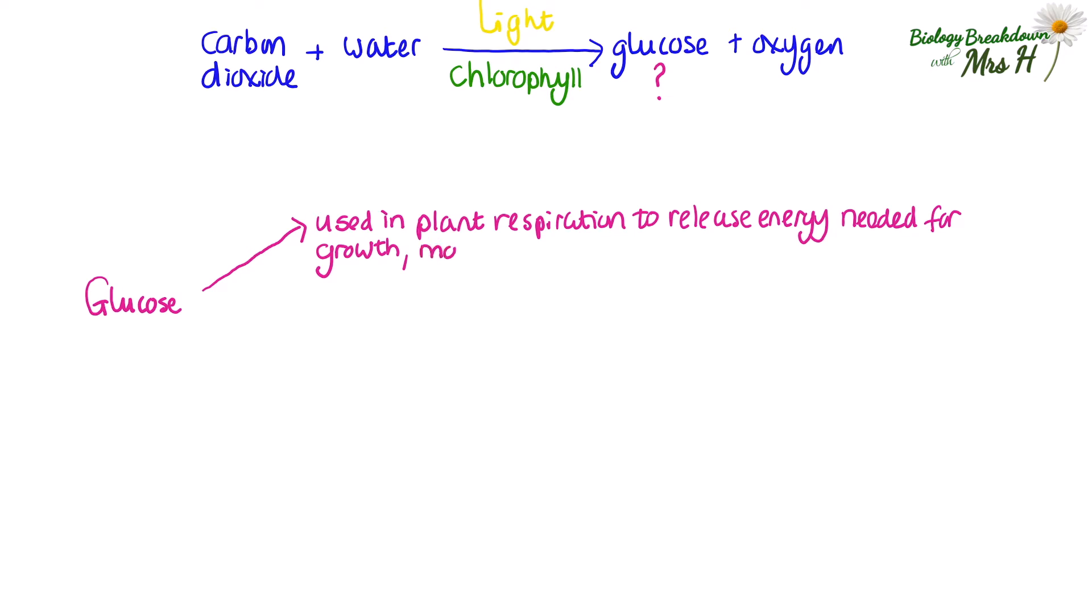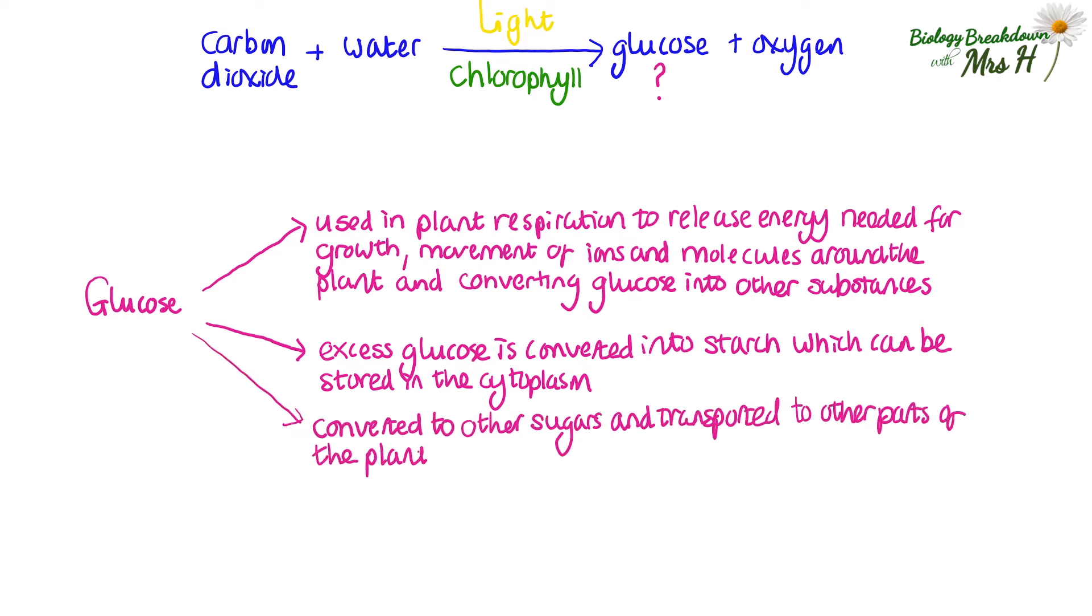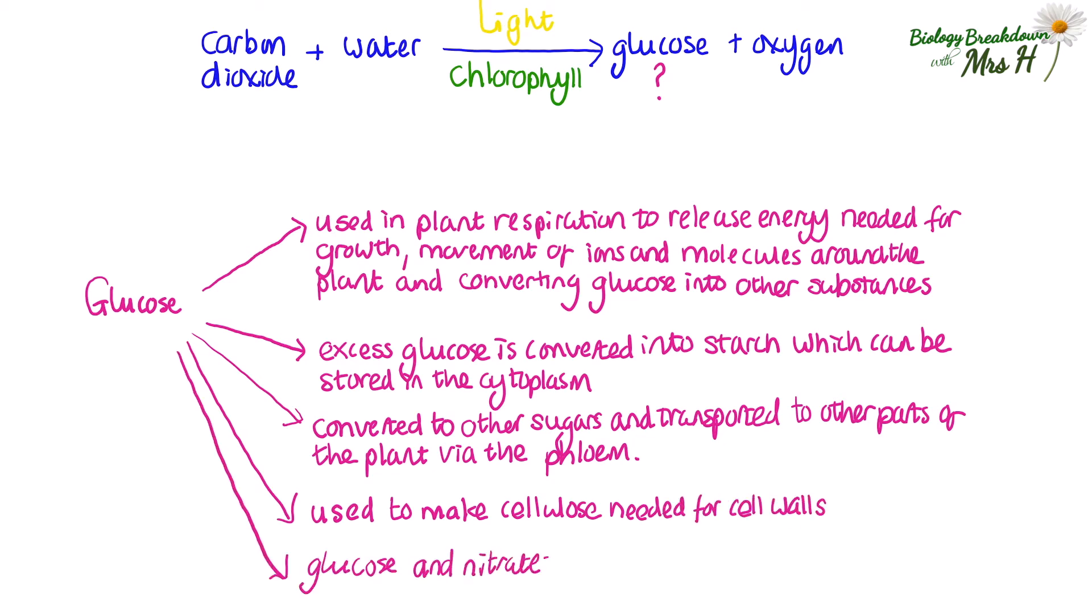The energy can also be used for the movement of ions or molecules around the plant. And the energy can be used to convert glucose into other substances, such as converting glucose into starch, which can be stored in the cytoplasm. It could be converted to other sugars and transported to other parts of the plant via the phloem. And the glucose could be used to make cellulose, which is needed for cell walls. And protein can be made from glucose and nitrates, and the nitrates would be absorbed through the roots of the plant.